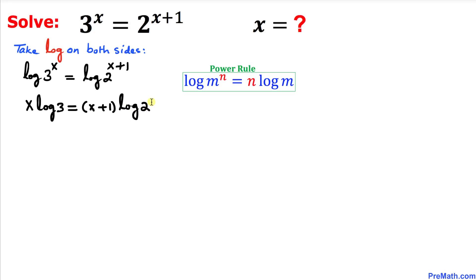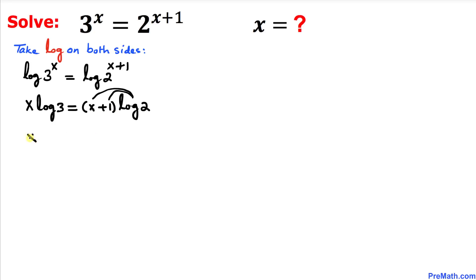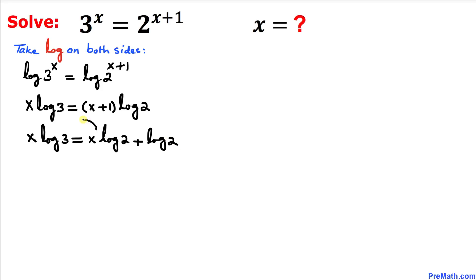Now let's focus on the right-hand side. We can distribute the log of 2, so this whole thing can be written as x log of 3 equals x times log of 2 plus 1 times log of 2. Now let's move the x log of 2 term to the left, so we write x times log of 3 minus x times log of 2 equals log of 2.